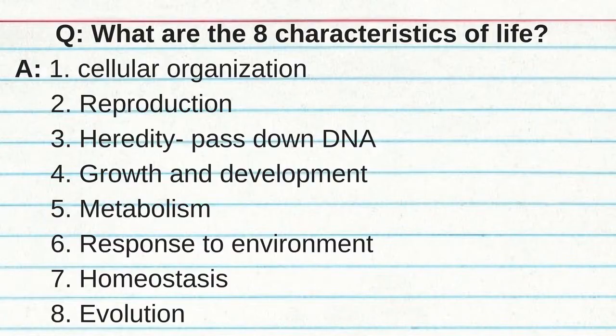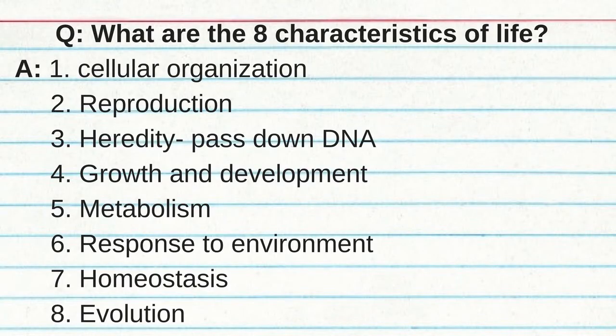What are the eight characteristics of life? One, cellular organization — we're made of cells. Two, reproduction. Three, heredity, which means you pass down your DNA. Four, growth and development. Five, metabolism, which means you can obtain and use materials and energy to carry out all cellular processes. Six, response to environment. Seven, homeostasis, which is maintaining an internal stable living environment. And eight, evolution.